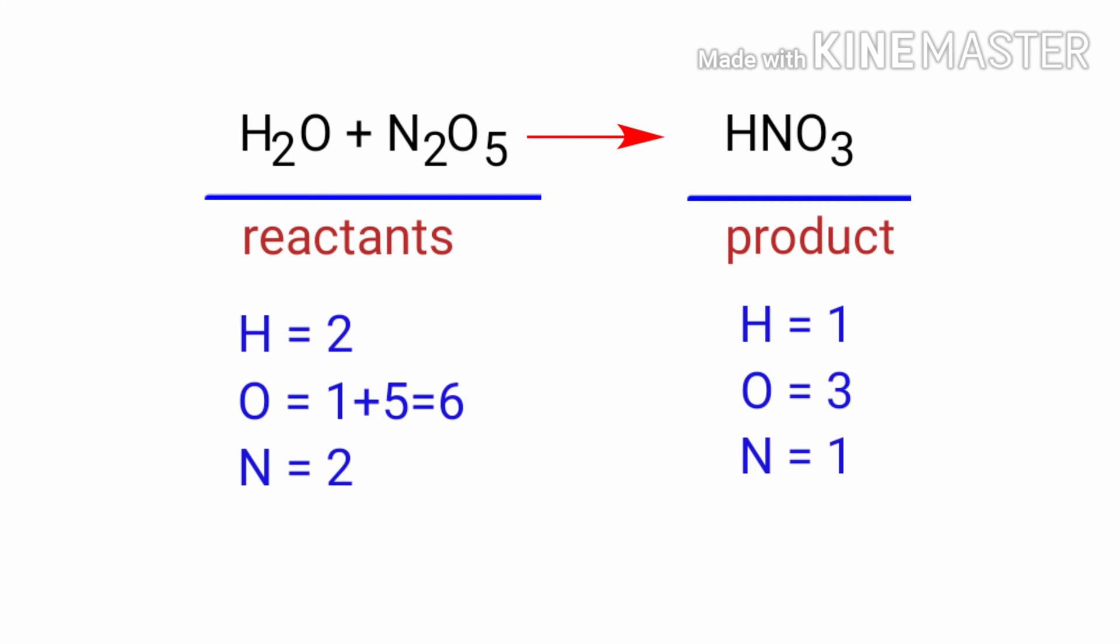If you look at this equation, the equation is not balanced. In the reactants side there are two hydrogen atoms, six oxygen atoms and two nitrogen atoms present. On the products side there are one hydrogen atom, three oxygen atoms and one nitrogen atom present. The number of atoms are not balanced on both sides.